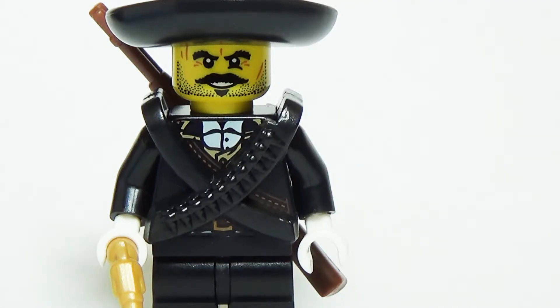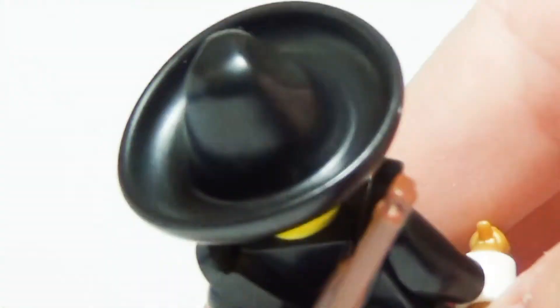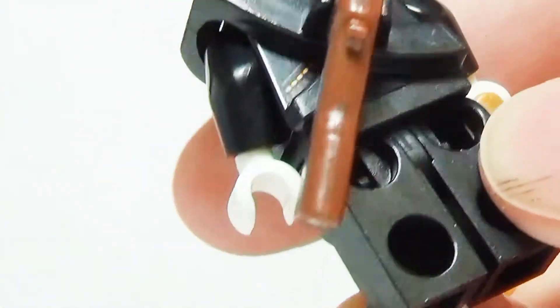The bandolier is perfect for minifigs who want to ensure that they won't run out of bullets in the heat of battle. In addition to providing extra ammunition, the bandolier also has a clip on the back to carry an extra weapon.